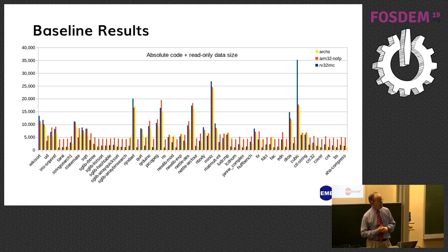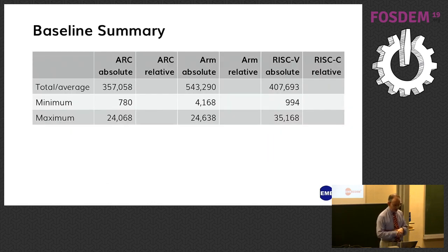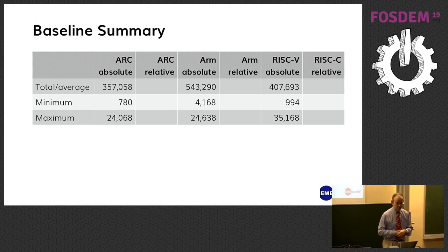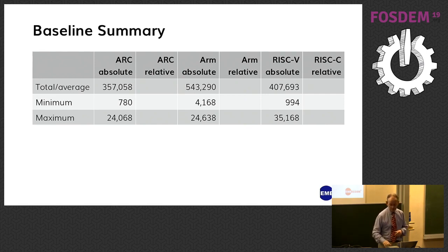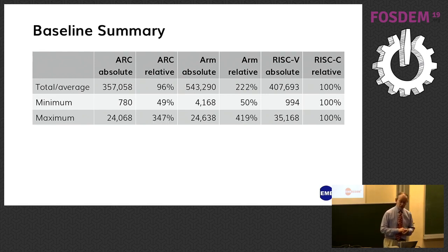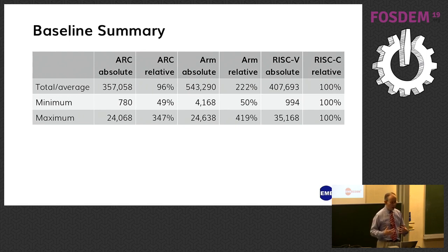Looking at the detailed statistics: the minimum size you get from an ARM program is 4K, whereas ARC and RISC-V are both under 1K. The biggest program for RISC-V is notably larger than the biggest for ARM or ARC. On average, ARM is coming out at 222% the size of RISC-V, because any small program is coming out four times as big, skewing that average. For ARC, on average it's actually slightly better than RISC-V.